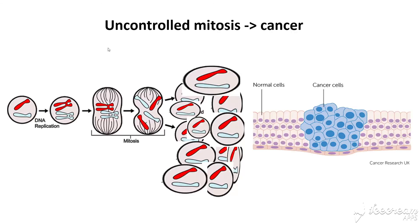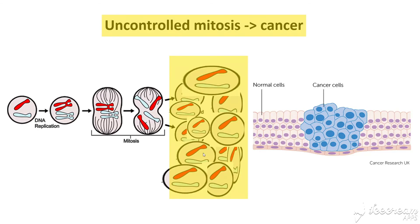Lastly, you need to know that uncontrolled mitosis can actually lead to cancer. This is part of the problem with treating cancer — it's just our own cells that have become uncontrolled. The mitosis process happens as normal, then something causes it to skyrocket, leading to loads of cells being created even though there's no damage to repair or growth needed. These cells form tumours and can cause all sorts of problems depending on where this happens. Cancer can spread, and research is ongoing — but for GCSE, just know that uncontrolled mitosis can lead to cancer.